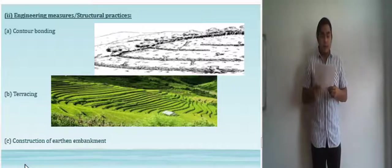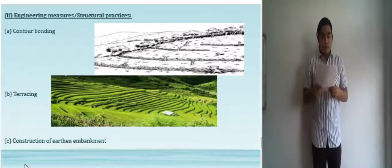The second one is terracing. It is a method of farming consisting of building platforms along a slope. And the next one is construction of earthen embankment.